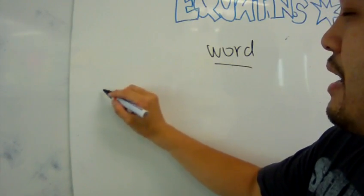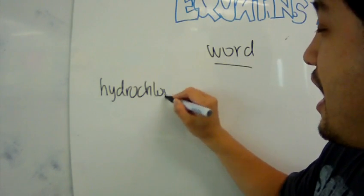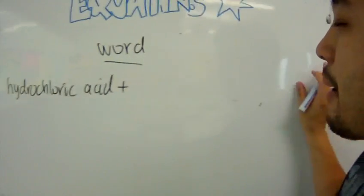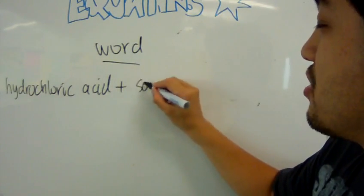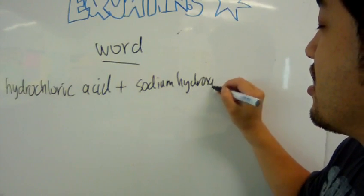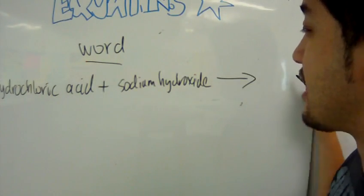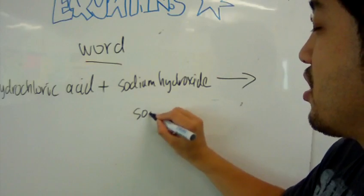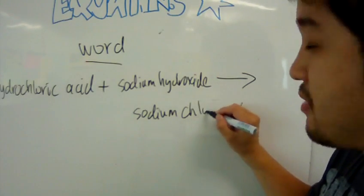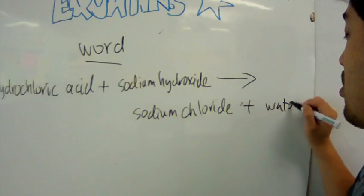So, for example, I have my, let's say, hydrochloric acid. Okay? Plus, my alkaline, let's say, sodium hydroxide. You've learned some of these things early on in your secondary career. And I get, let's say, sodium chloride. Now, I'm writing this really big, so it doesn't fit on one line, but it should be a one line thing. And I get water.